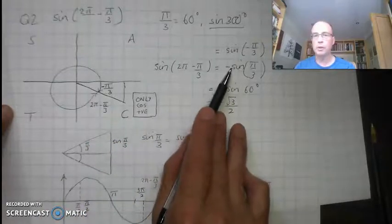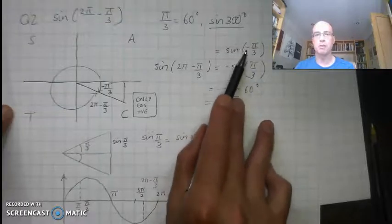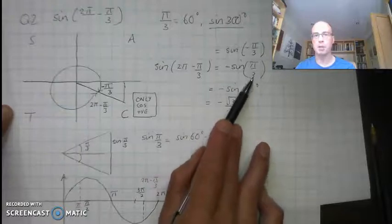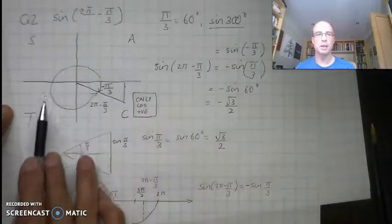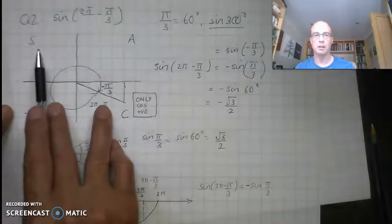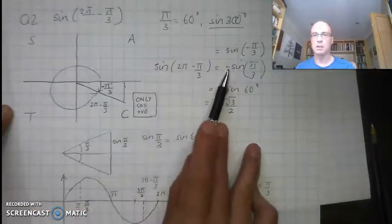So I'm looking for this negative sine of π/3. So sine of negative π/3 is the same as sine of positive π/3, but with that minus sign. The CAST diagram tells me the only places where my sine are positive are here and here. Down in this quadrant, only cosine, so I need this negative sine.